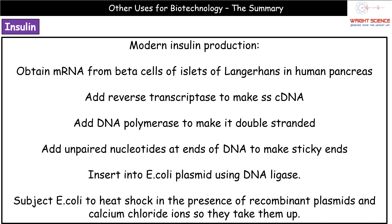This modern technique is genetic modification, which should be familiar from GCSE and A-level work. We start by taking mRNA from the beta cells of the islets of Langerhans, which are found in the human pancreas and are responsible for producing insulin. So the mRNA is all to do with insulin production. We then produce single-stranded cDNA using the enzyme reverse transcriptase, basically changing the RNA code into a DNA code. We then add DNA polymerase, which converts the single-stranded cDNA into double-stranded cDNA.